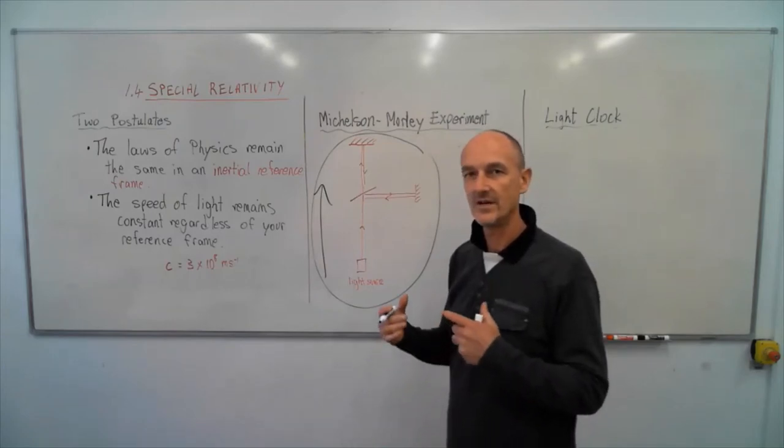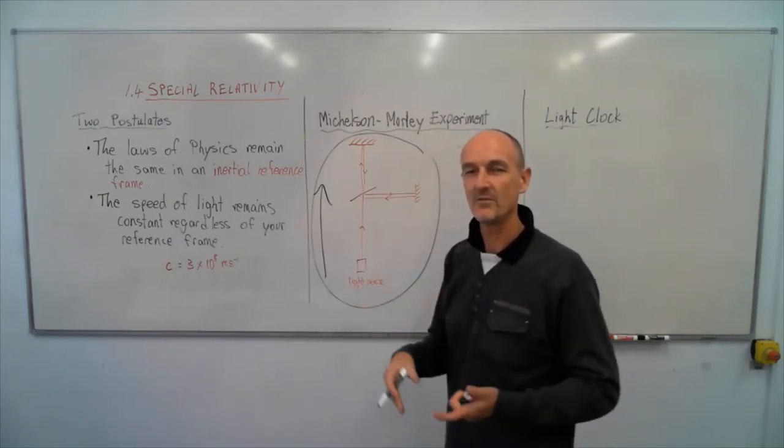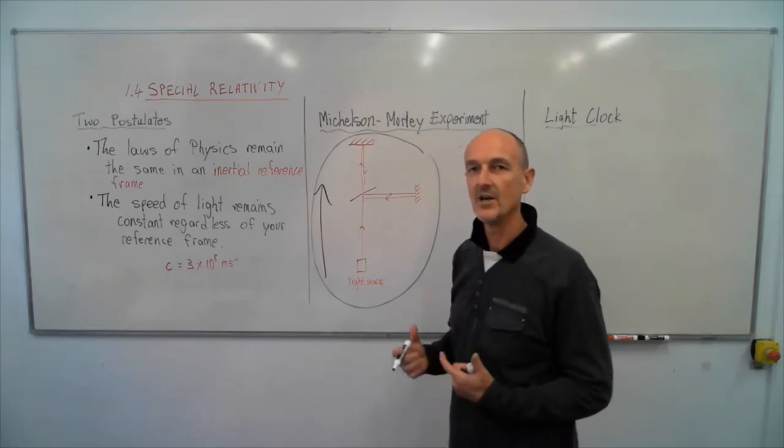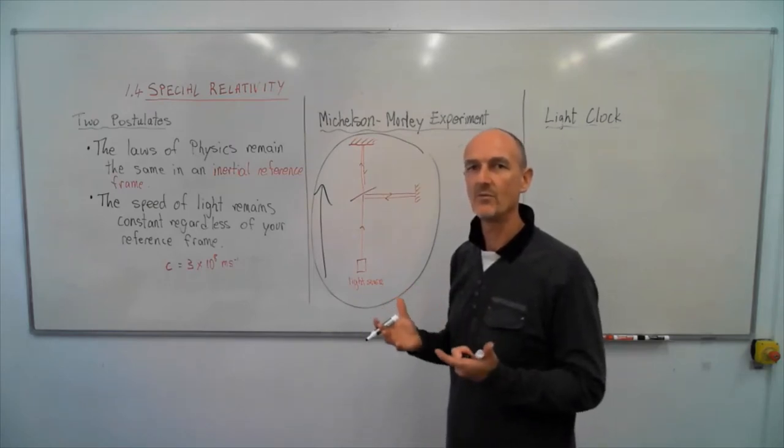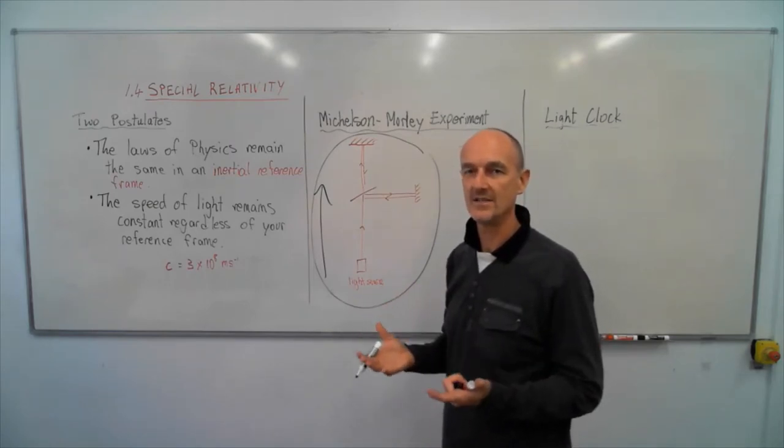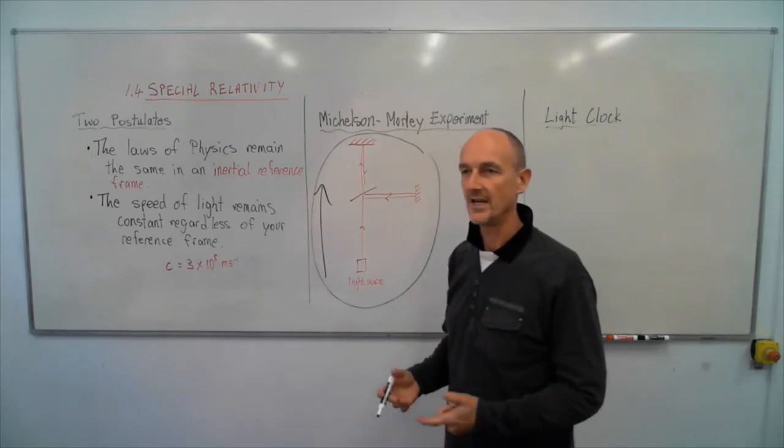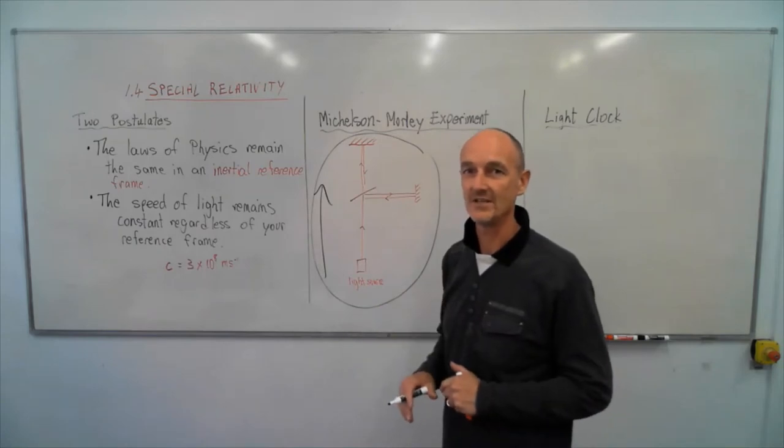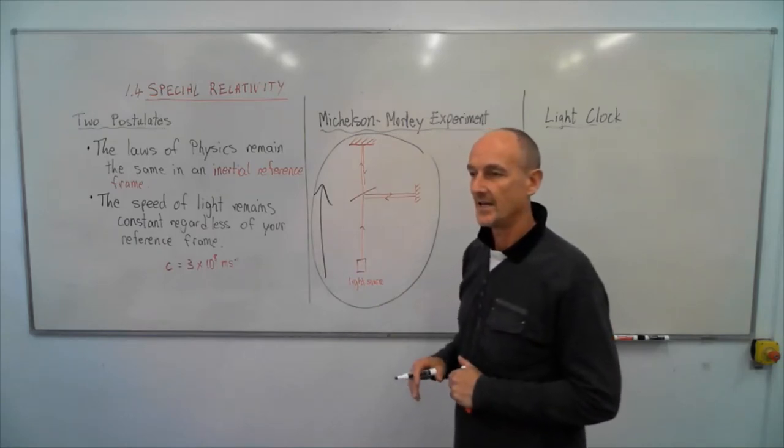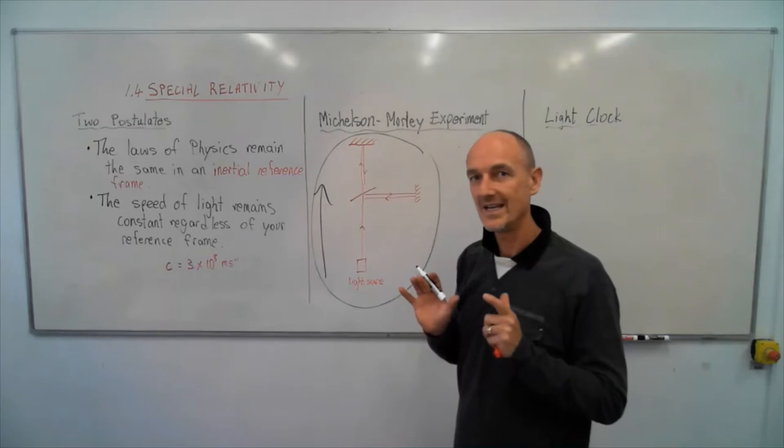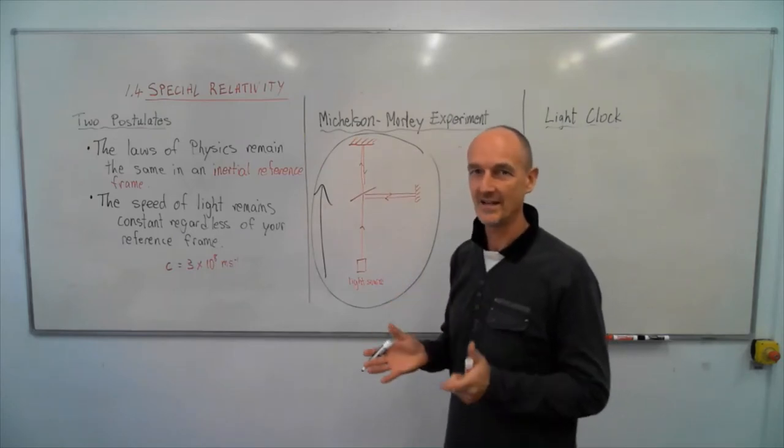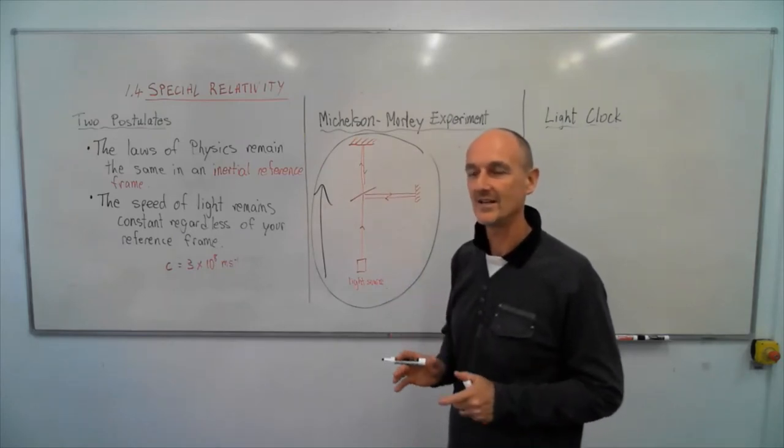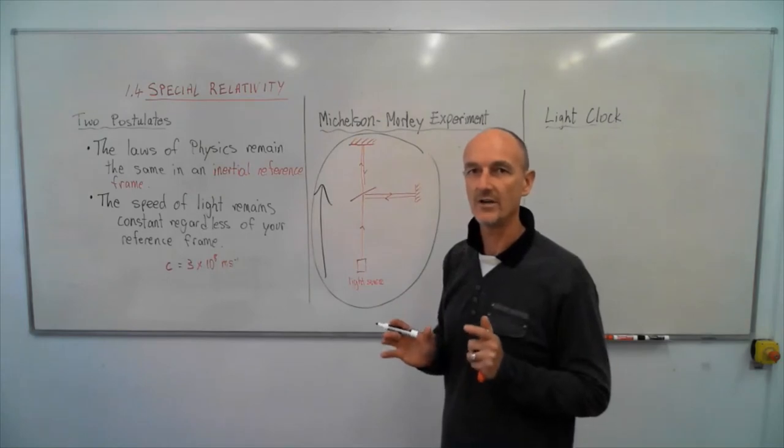The speed of light remained constant whether it was moving this way or that way. This was a very startling result. Scientists, including Einstein, but before him Lorentz and others, were trying to come up with ways to explain this conclusion. It really shook the foundations of physics. To explain the dilemma, we need to consider Einstein's idea of what he called a light clock.